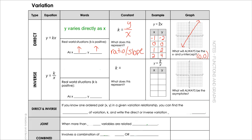Then we have what's called inverse variation. The equation is y equals k divided by x, so this time we're dividing. That means y varies inversely as x — as x is increasing, y is decreasing. To find this constant, we take x times y, and that represents a product.